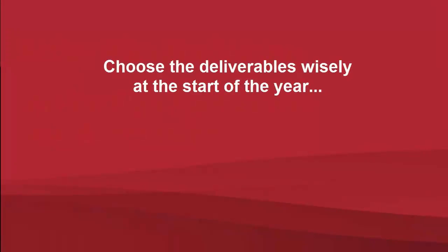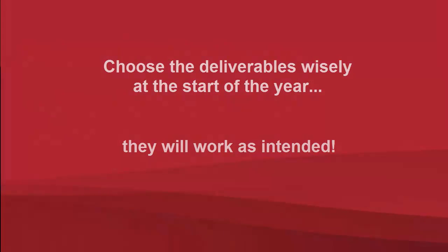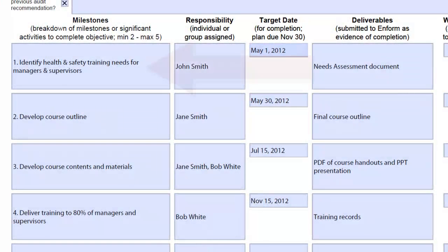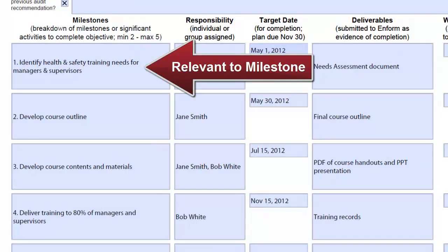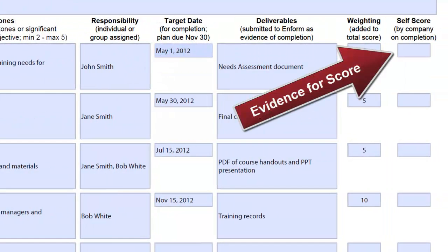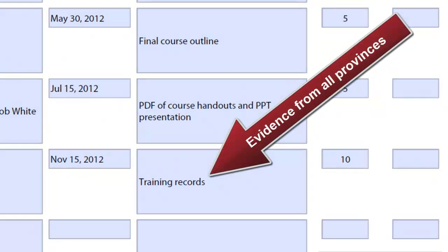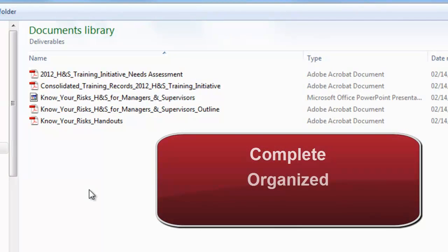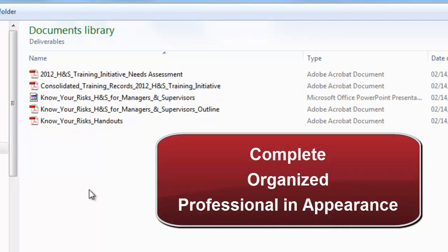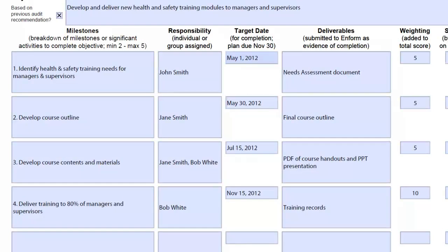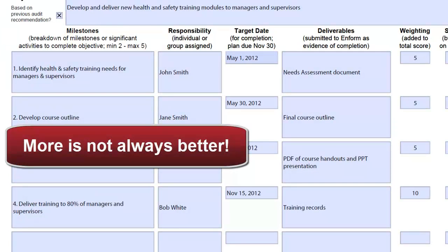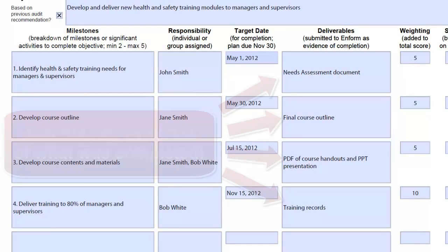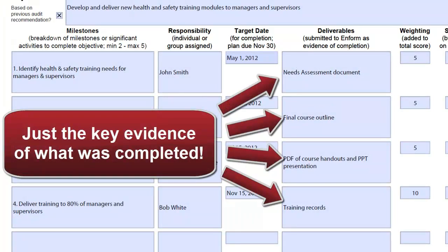If you choose the deliverables wisely at the start of the year, they will work as they are intended. Good deliverables are relevant to the milestone or the activity. They provide good evidence for the score you're assigning. They offer evidence from all provinces wherever possible. And they are complete, organized, and professional in appearance. Remember, more is not always better — you don't need to send it all.